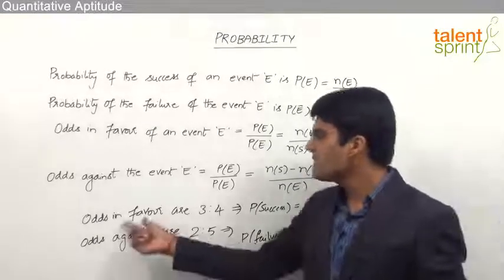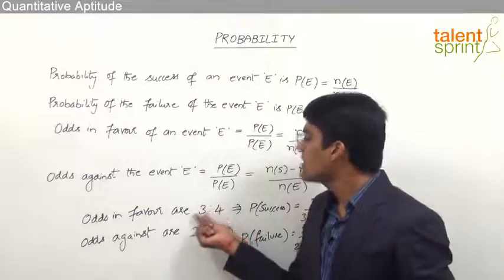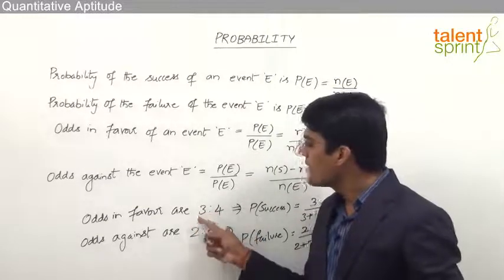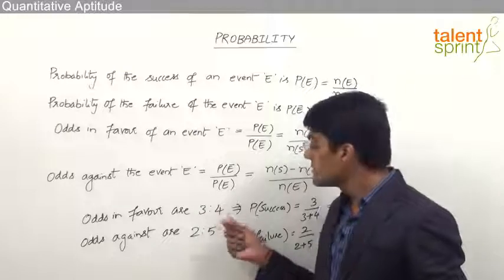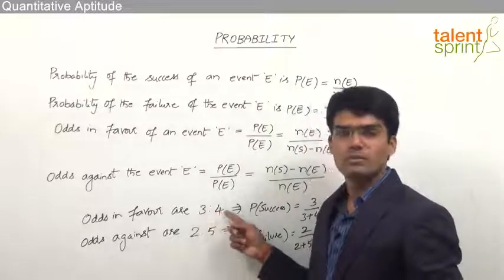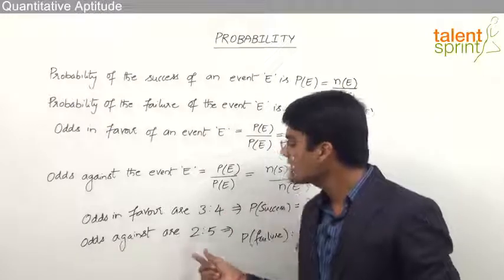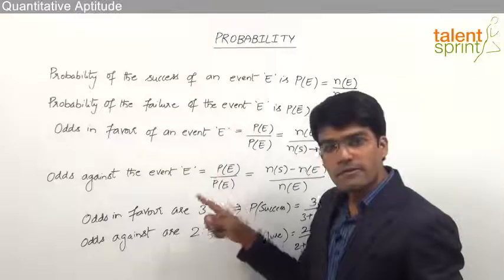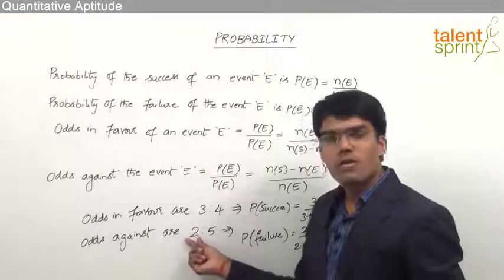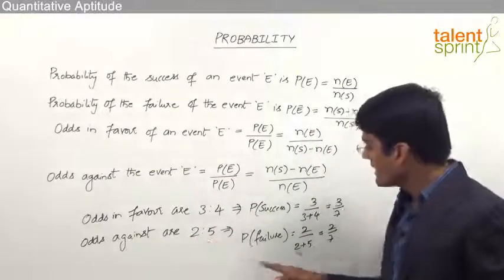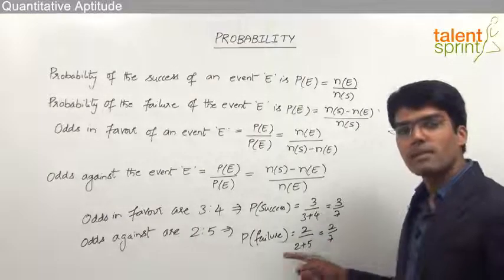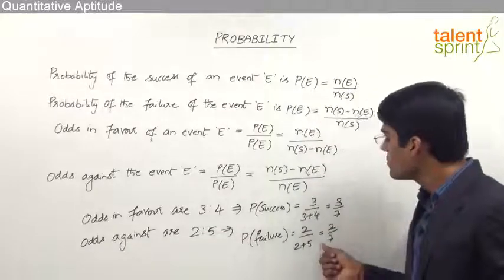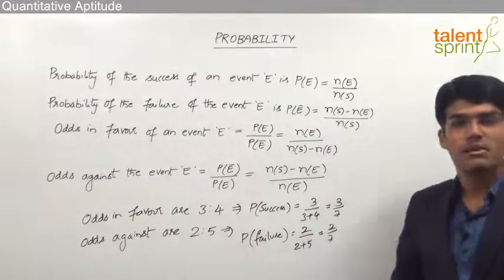Simply remember that odds in favor is a ratio showing favorable outcomes to unfavorable outcomes. So the probability of success is favorable outcomes divided by the total of the two, and probability of failure is unfavorable outcomes divided by the total. Odds against shows unfavorable to favorable outcomes, so the probability of failure is unfavorable outcomes divided by their sum, and the probability of success is favorable outcomes divided by their sum.